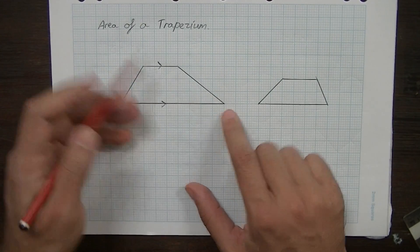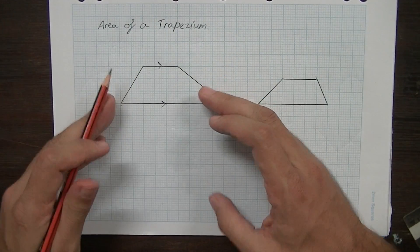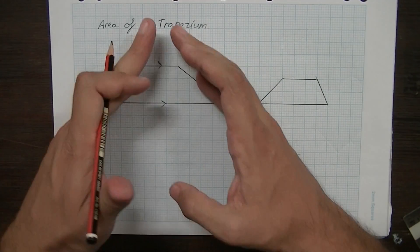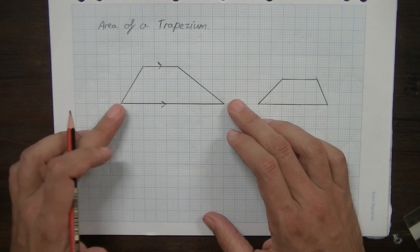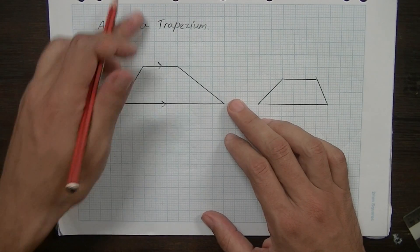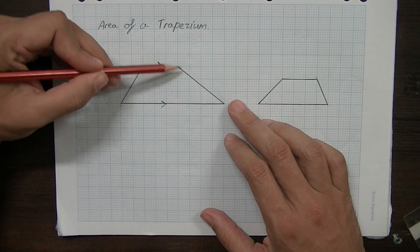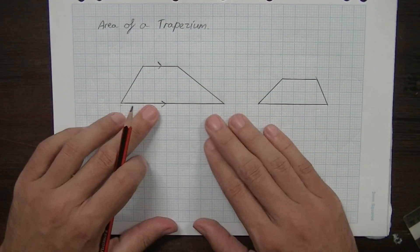Now the sides, either side, they angle in towards the top. Obviously if it was upside down, they'd angle in towards the bottom. The point is they angle in towards each other like that. You could also think of a trapezium as a triangle that's had the top cut off it. That triangle would meet up there somewhere. So that's what a trapezium is.